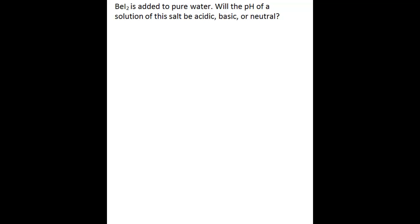In this problem, you're told that beryllium iodide is added to pure water, and you're asked if the pH of a solution of this salt will be acidic, basic, or neutral. In water, beryllium iodide dissociates into beryllium cations and iodide anions. The question here is, how will these ions interact with water molecules in solution?